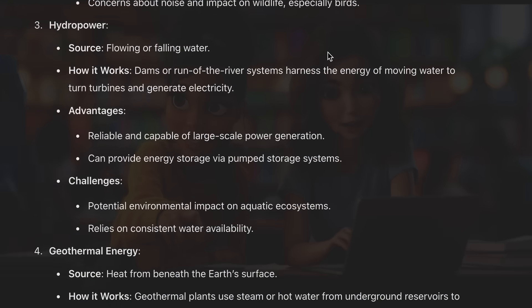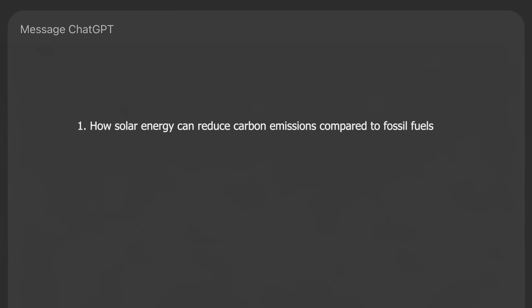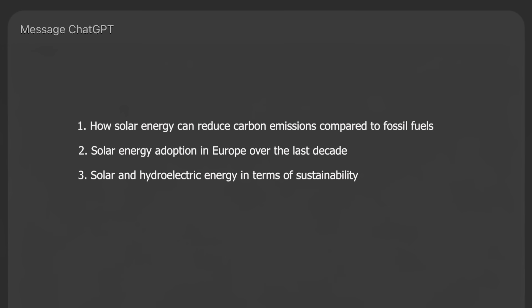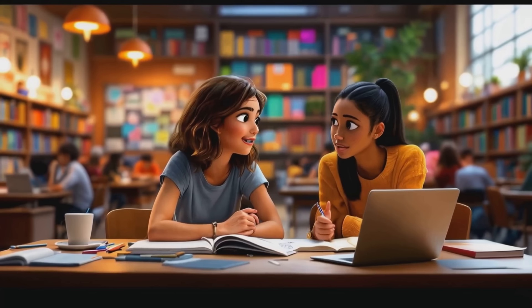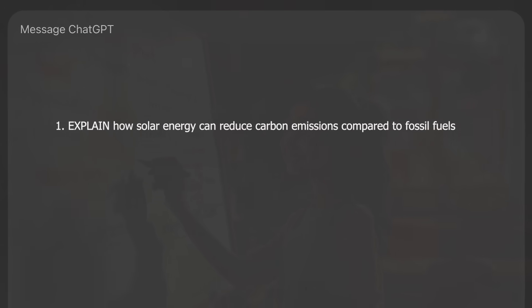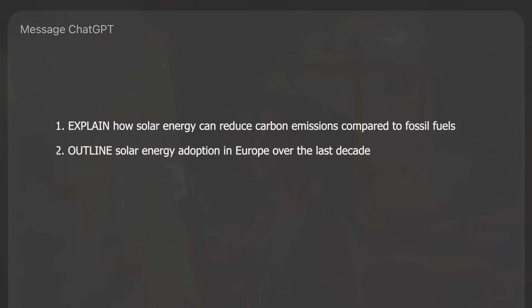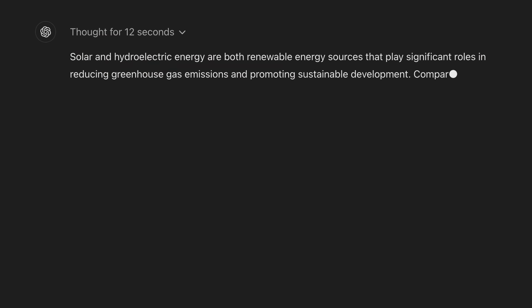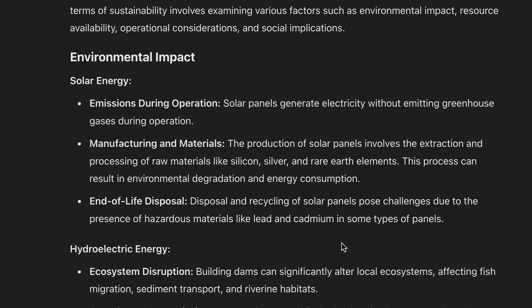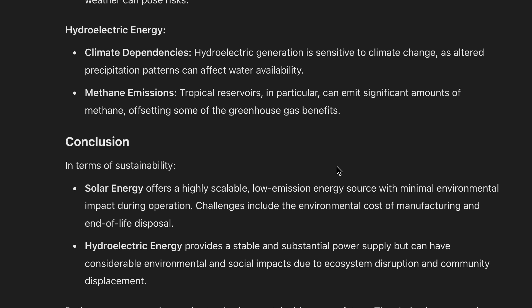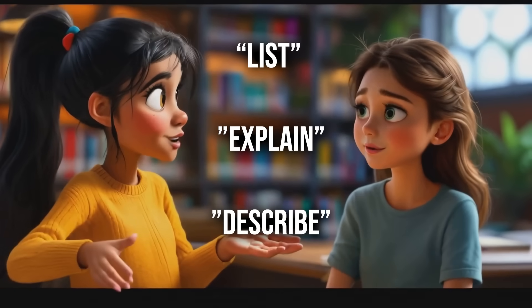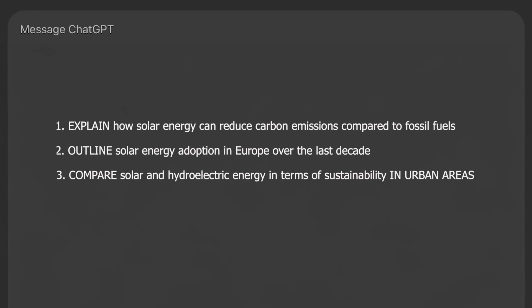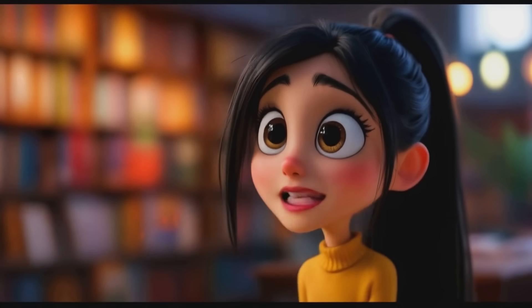The prompt is a bit jumbled — a clear structure helps ChatGPT understand exactly what you're asking. So I should rephrase it more clearly? Start with an action verb, specify the topic, and mention any details you want included. That is way better — it even mentions job creation and air quality improvements in cities. Using action verbs like 'list,' 'explain,' or 'describe' guides the AI on how to format the response, and specifying the context — like 'in urban areas' — makes the answer more relevant.